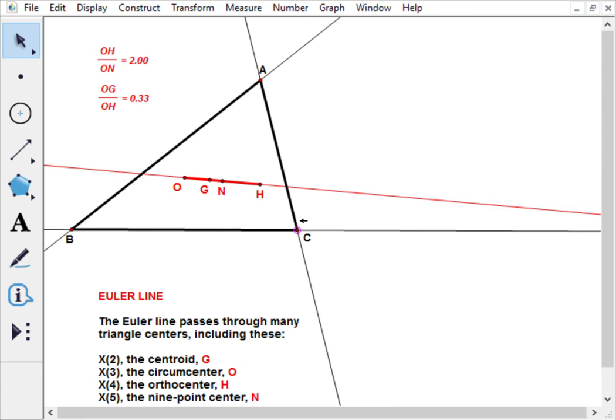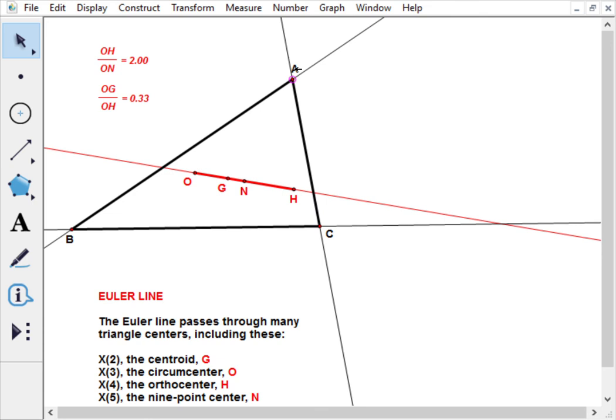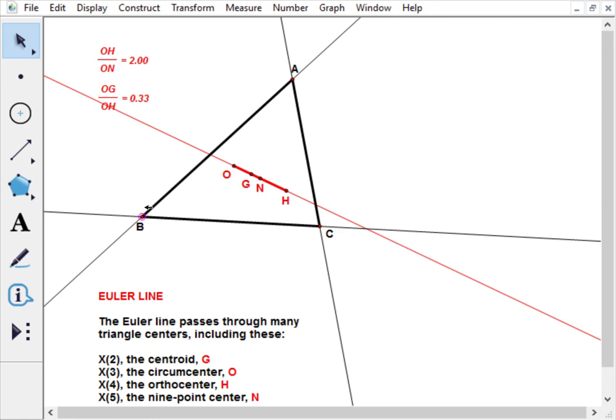There's also a fourth point N, which is the nine-point center, which we'll talk about shortly. But here you can always see that there is actually a fixed ratio, and the ratio is 2 to 1 from HG to GO. And that's independent of the triangle - that's a fixed, beautiful quantity.